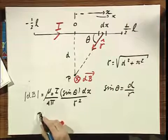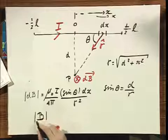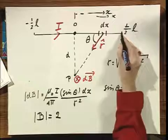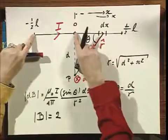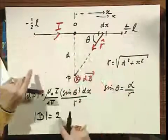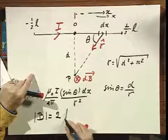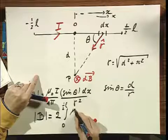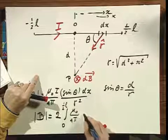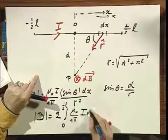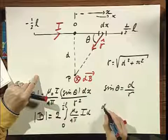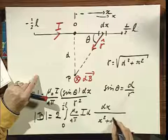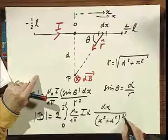And so that means that I will find that B equals twice, because I'm going to integrate only from here to there. But I must take this part into account. So I double it, because it's completely symmetric, so I can put a two here. Integral from zero to one half L, mu zero divided by four pi times I times D, and now I get here DX divided by X squared plus D squared to the power three halves.